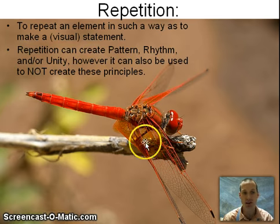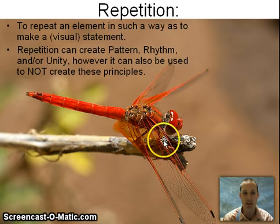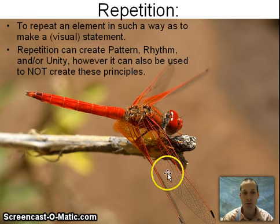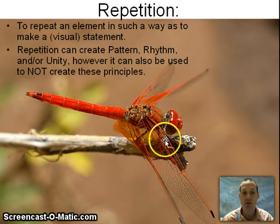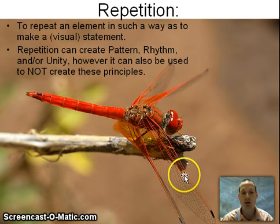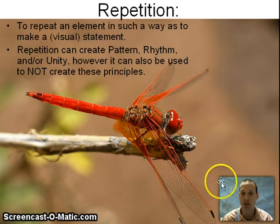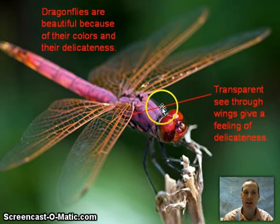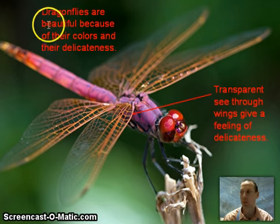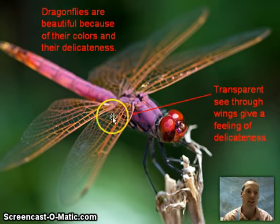If we look at this picture of this dragonfly — and more specifically the wing — you'll notice that little lines are repeated all the way through the dragonfly's wings to make up the texture. Those little lines that are repeated do not create a pattern, they don't create a rhythm, and they do not create unity in the whole composition. Most insects have that kind of icky insect thing going on with them, whereas dragonflies are beautiful because of their colors and their delicate wings.